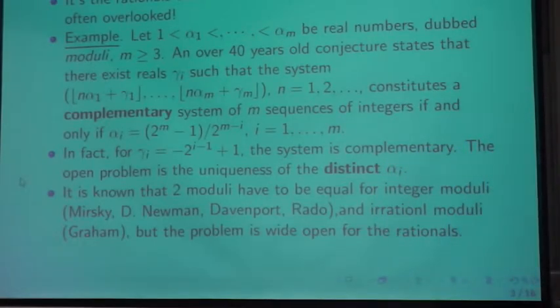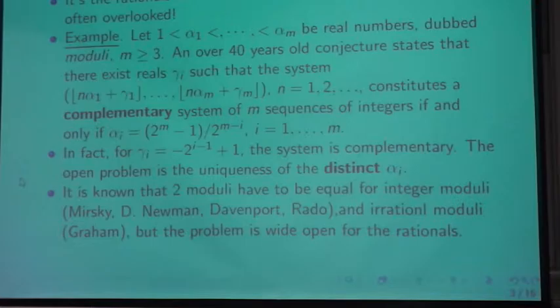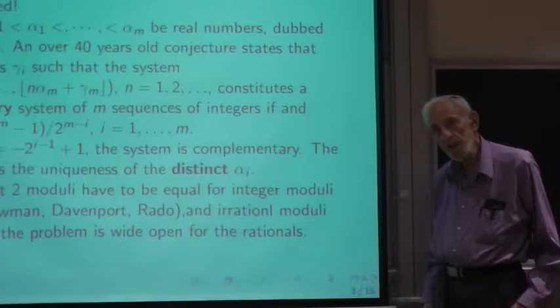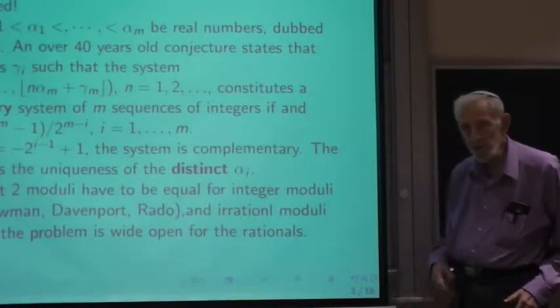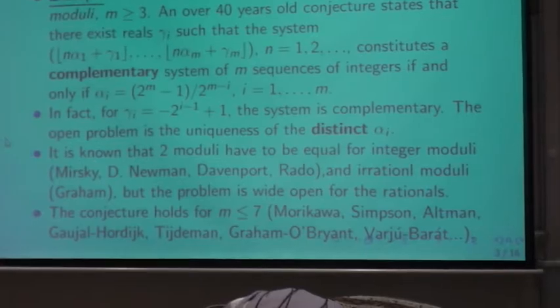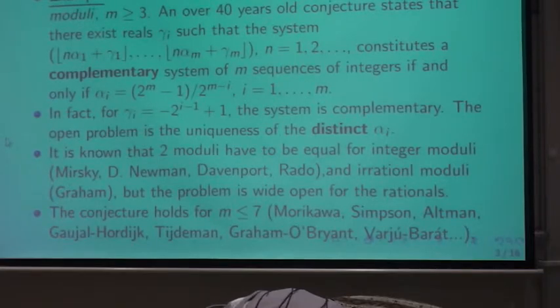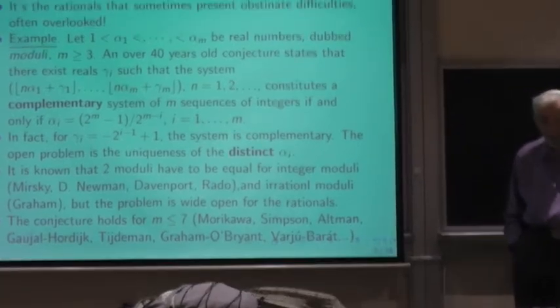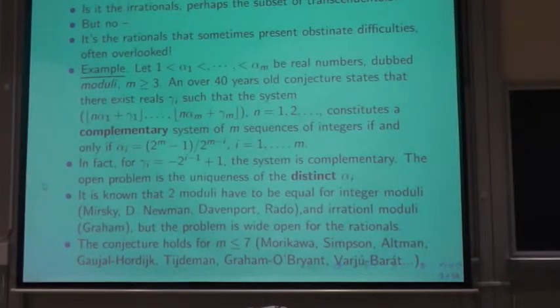And the reason you want m bigger than or equal to 3 is you want to avoid Beatty sequences. Because we want to avoid Beatty sequences, which is you get with disjoints. That's right. Because Beatty sequences for m equals 2, they can, they are, in fact, they must be different if they're irrational. When they are rational, of course, in the homogeneous case, they cannot be disjoint. But they can be in the inhomogeneous case. And we have some characterization of how these offsets have to look.